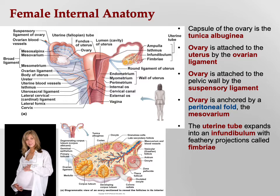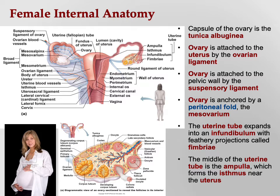The uterine tube — formerly called the fallopian tube — expands at the end near the ovary into the infundibulum, similar to the infundibulum of the pituitary. There are feather-like, finger-like projections over the ovary called the fimbriae. The middle of the uterine tube is the ampulla, and where the uterine tube joins the uterus is called the isthmus — like the Isthmus of Panama connecting North and South America.